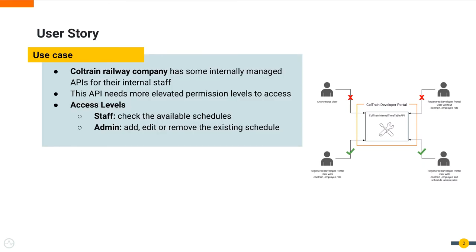Coltrane has a separate API to manage schedules for its internal staff. This API needs to have more elevated permission levels to access than their public API. All employees in the Coltrane company have access to the end-user application where they can view train schedule details using this API. All staff should be able to check available schedules, whereas only staff with admin privileges can add, edit, or remove existing schedules. Any other registered or public user should not be able to view this API, since it is there for internal tasks.